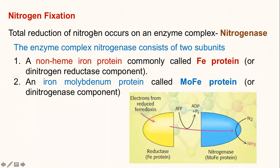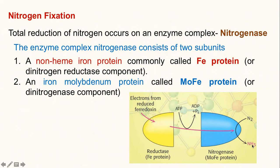The total reduction of nitrogen occurs through an enzyme complex called nitrogenase. This enzyme complex consists mainly of two subunits: one is a non-heme iron part called the iron protein, or dinitrogenase reductase component, and the second is an iron-molybdenum protein, which is the dinitrogenase component. These two subunits — the iron protein subunit and the molybdenum-iron protein subunit — in the presence of ATP convert atmospheric nitrogen to ammonium.